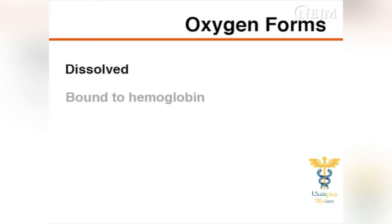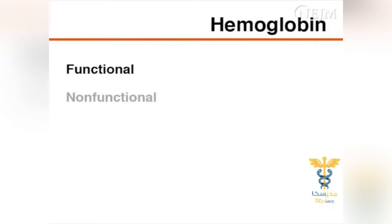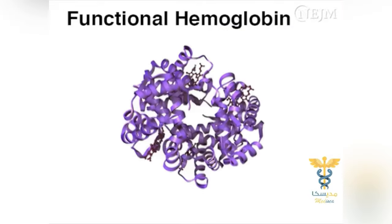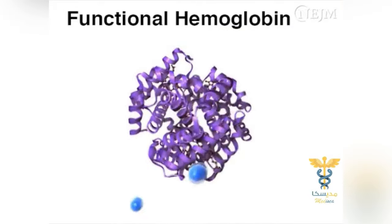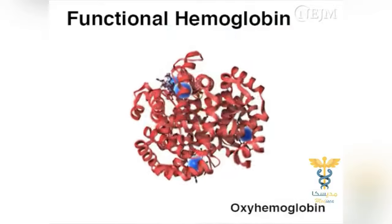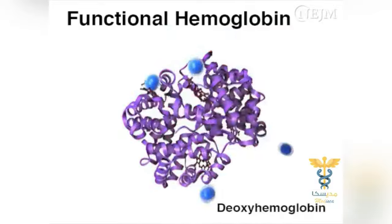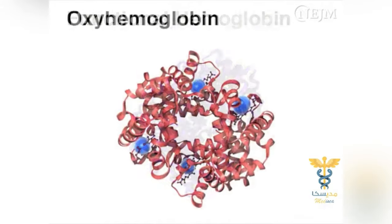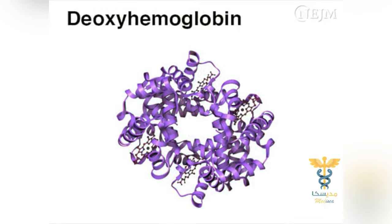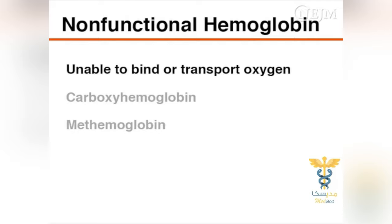Oxygen is present in two forms in the blood: dissolved and bound to hemoglobin. Hemoglobin can be functional or non-functional in terms of oxygen binding and transport. Functional hemoglobin binds and transports oxygen and is present as oxyhemoglobin and deoxyhemoglobin. Oxyhemoglobin contains bound oxygen, and deoxyhemoglobin is reduced hemoglobin without bound oxygen.